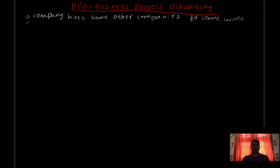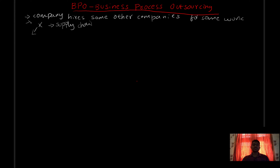An example is an iPhone manufacturing company. If you have an iPhone manufacturing company, you don't have to make all raw materials yourself — for example, capacitors, batteries, and various components. What they do is outsourcing. They outsource to a company, say Company X. Company X will handle supply chain management. The supply chain company manufactures the capacitors and directly supplies them to the iPhone or Samsung company. This is one type of outsourcing — supply chain management is outsourced.